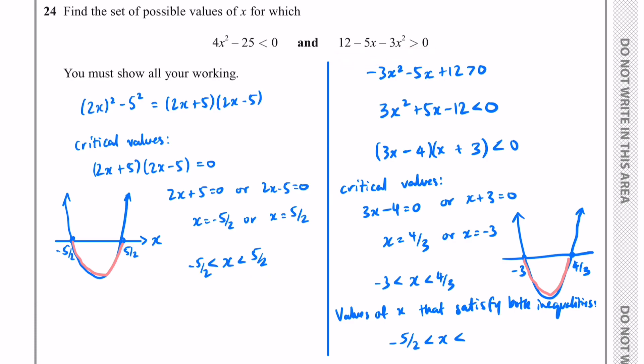We can test with x = 2: since 2 > 4/3, plugging into the second expression shows it would not be less than 0. So the maximum value that satisfies both inequalities is 4/3. Therefore the final answer is −5/2 < x < 4/3. If you want more problems on quadratic inequalities to really understand this topic, check out my other video — I go through lots more examples. I hope you found that helpful. Please leave a like if you did, and I'll see you in the next one. Bye for now.